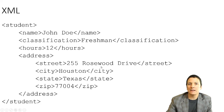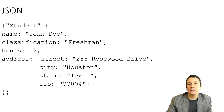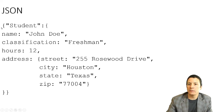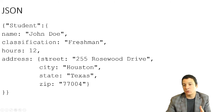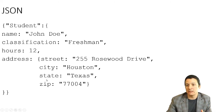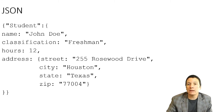Now let's look at the same data in JSON format. In JSON everything is represented as an object, and objects are enclosed in curly braces. We have an opening curly brace to indicate we're starting the student object, and within it we have all the attributes that make up a student — name, classification, hours, and address. Notice that the address element is also wrapped in curly braces, making it a sub-object with attributes: street, city, state, and zip.